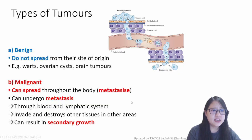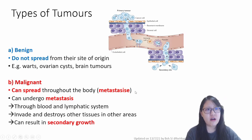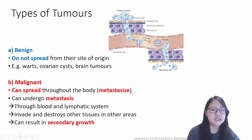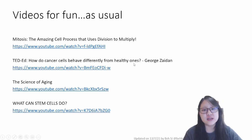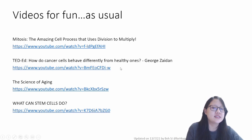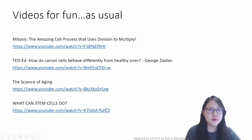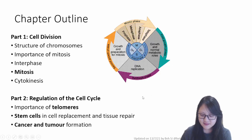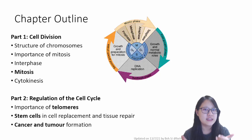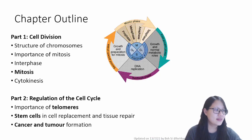There is actually a lot more about cancer we could discuss — it goes quite deep. Look it up if you want extra information. There are also additional videos on why cancer cells behave differently from healthy ones and why it is so hard to cure, along with videos on other topics. That's it for chapter 5. Use the chapter outline as your checklist, and feel free to ping me on Teams if you have any questions. Bye-bye!